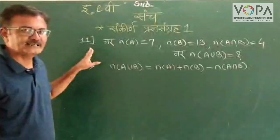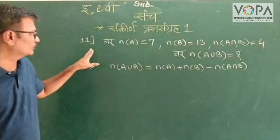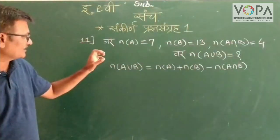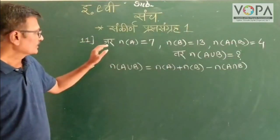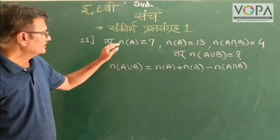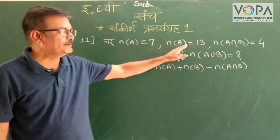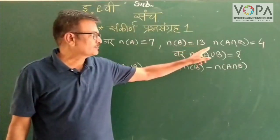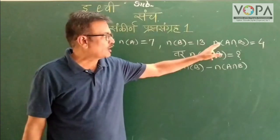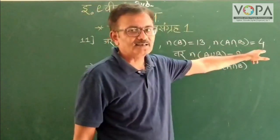Hello everyone, I am going to ask you a question. If the number of A is 7, number of B is 13, and number of H and D is 4...